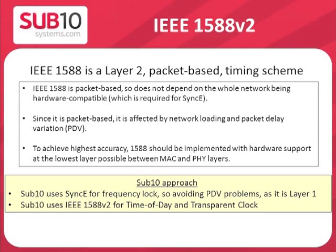1588 can be used for both frequency synchronization and timing synchronization. Sub10 Systems prefers to use SyncE for frequency synchronization because SyncE works at layer 1 and doesn't suffer jitter or PDV problems. Sub10 uses 1588 for time-of-day and transparent clock, with 1588 working hand in hand with SyncE. Sub10 believes this is the most robust solution for timing.